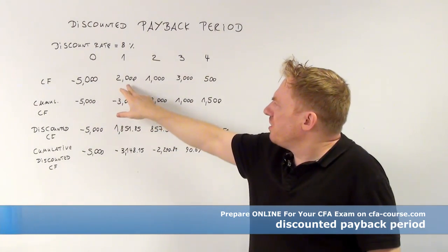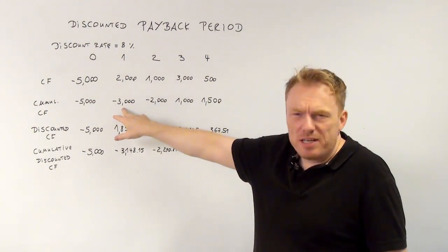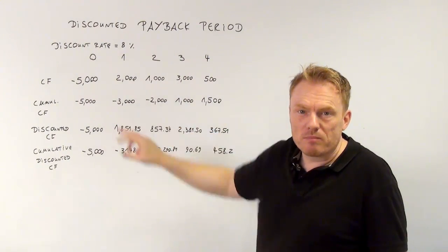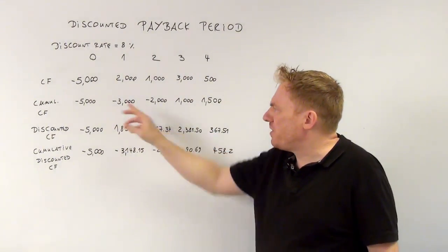You add minus $5,000 to plus $2,000 leading to minus $3,000 in period 1. Which means waiting for one period there is minus $3,000.